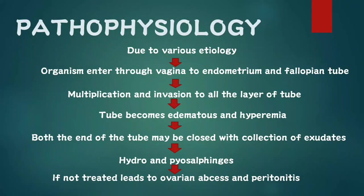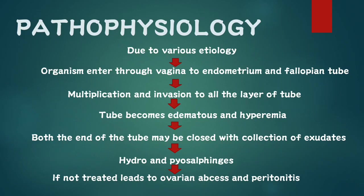Pathophysiology: Due to various etiological agents such as bacteria, fungi, and viruses, these micro-organisms enter through the vagina to the endometrium and fallopian tube of the uterus. After invading, they multiply and spread to all layers of the tube, causing the tube to become edematous and hyperemic. Later, both ends of the tube may be closed with a collection of exudate (pus), leading to hydrosalpinx or pyosalpinx — that is, the fallopian tube filled with water or pus. If left untreated, this can lead to ovarian abscess and peritonitis.